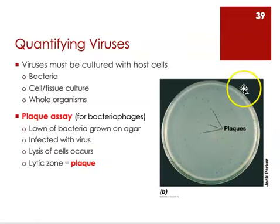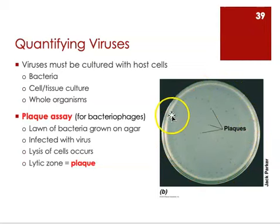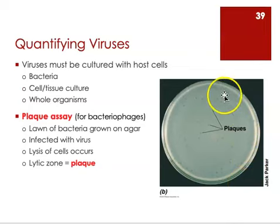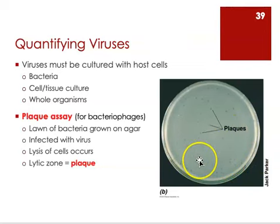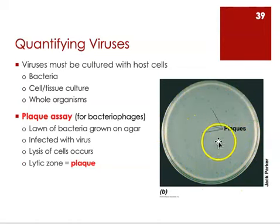What you're looking at in this picture on the right is an agar plate that had bacterial culture spread over its surface using that hockey stick tool we looked at in a previous video. When we use the hockey stick we take some bacterial culture and spread it all over the surface of the agar plate nice and evenly. What we get from that is bacterial cells growing all over the surface of the plate — you don't get colonies, you don't get little groups of cells, you get what's called a lawn of cells.